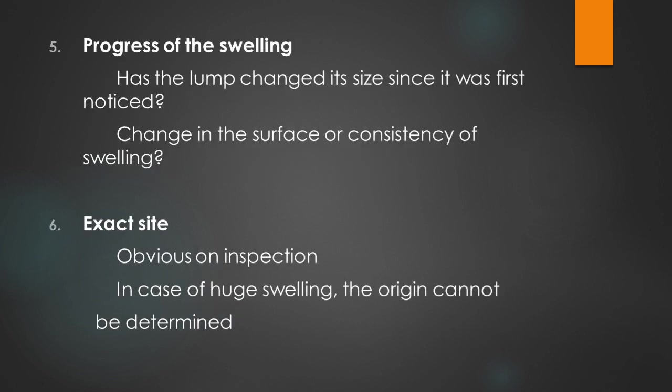We then look at the progress of the swelling — did the lump change its size since it was first noticed, or was there a change in the surface or consistency? Benign tumors grow slowly and remain static for a long period, whereas a malignant tumor grows quickly and the swelling suddenly increases after remaining static. In this way we can differentiate between benign and malignant tumors.